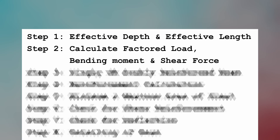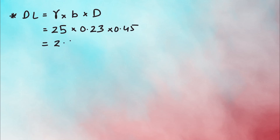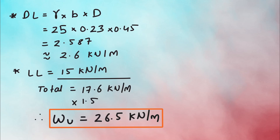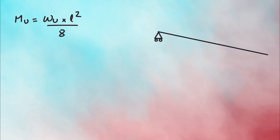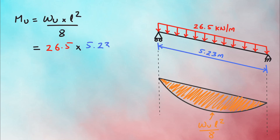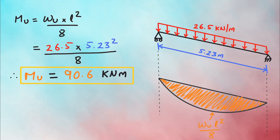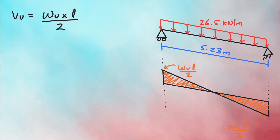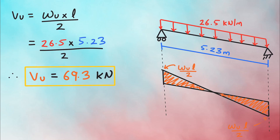Step 2 is calculating the factored load, moment, and shear force. Factored load W is the total dead load (unit weight of concrete × B × D) plus the imposed load of 15 kN/m, giving a total UDL of 17.6 kN/m. Factoring by 1.5 gives a total factored load of 26.5 kN/m. Using WL²/8 for the simply supported beam gives a factored moment MU of 90.6 kN·m, and factored shear force VU = WL/2 = 69.3 kN.